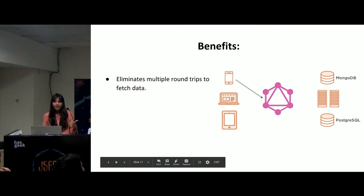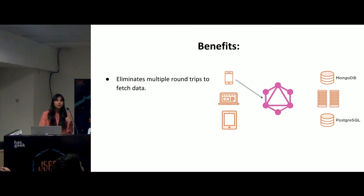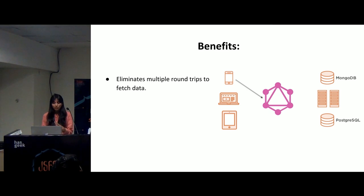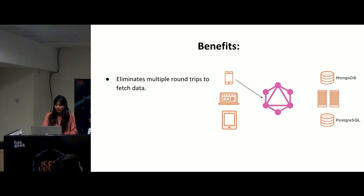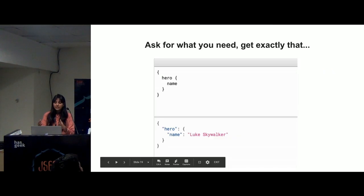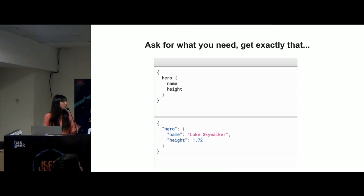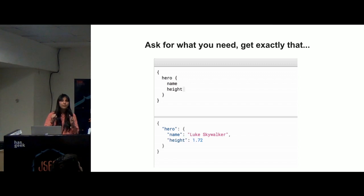So the benefits were quite clear. First, it eliminated multiple roundtrips to the server — we now only make one roundtrip and get all our data in a single API call. Second, it solves the problem of under-fetching and over-fetching — whatever I ask for, I get exactly that in the response. As shown in the demo, as soon as I remove a field from the query, it gets removed from the response. Third, it makes it easier to aggregate data from multiple resources. Rather than the client talking to each of three different APIs, we have this complexity handled by the GraphQL layer, and the client simply makes a call to the GraphQL layer.